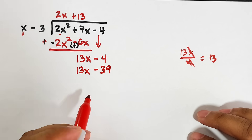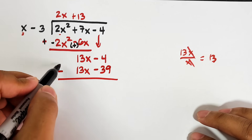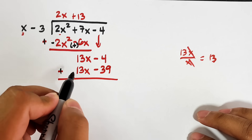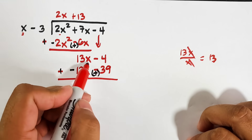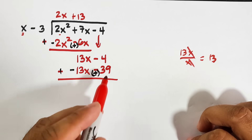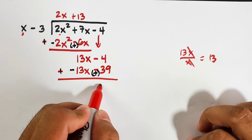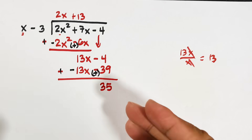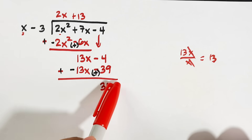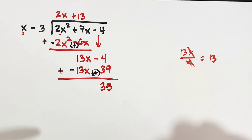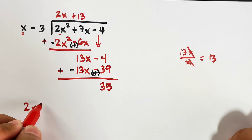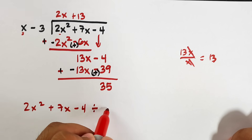The subtraction becomes addition: positive becomes negative, negative becomes positive. So 13x plus negative 13x is zero, and negative 4 plus positive 39 is positive 35. Comparing this to example one — here we have a remainder of 35, while in the first example the remainder was zero. So we need a special form to write the final answer for 2x squared plus 7x minus 4 divided by x minus 3.